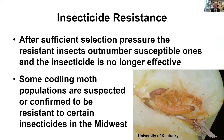After sufficient selection pressure and a sufficient number of applications, the resistant insects outnumber the susceptible ones, and the spray that you used with great success no longer works at all. Some codling moth populations here in the upper Midwest have suspected or confirmed insecticide resistance, and we have resistant mites in some of our orchards as well. Head lice is a personal pest that has shown a lot of insecticide resistance — if you've had children in grade school with a head lice problem, you know how difficult control becomes. That same control difficulty will happen in your orchard or vineyard if insecticide resistance occurs.